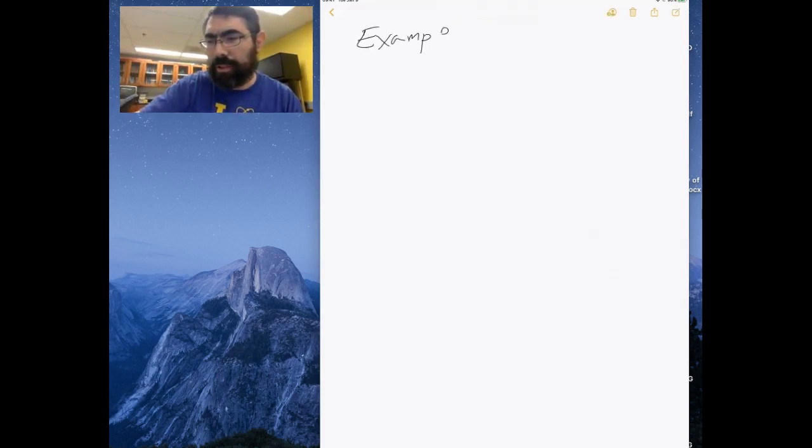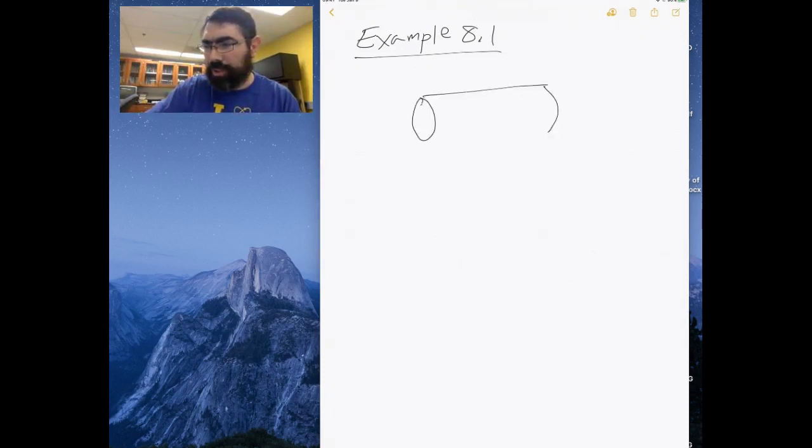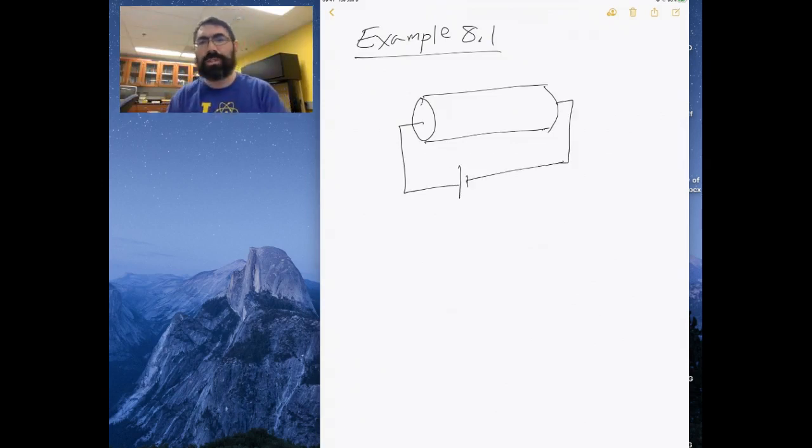In this video, I want to go over example 8.1 from chapter 8. In this example, we have a wire which I'm going to draw as a cylinder, and we're going to have a current flowing through the wire. Work is going to be done and current is going to flow because